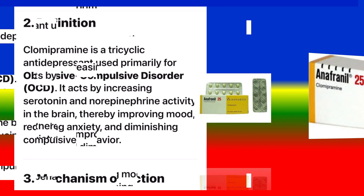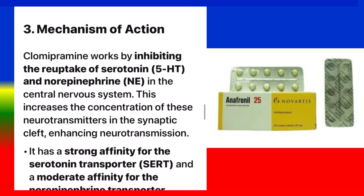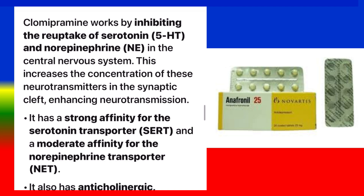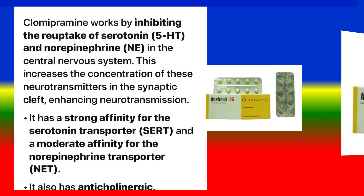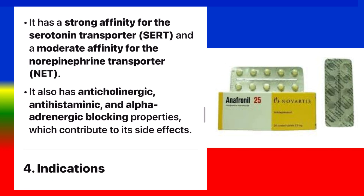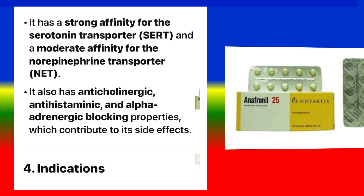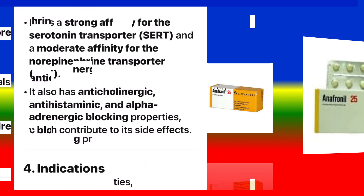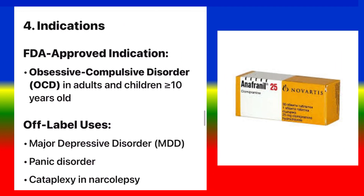Mechanism of Action: Clomipramine works by inhibiting the reuptake of serotonin (5-HT) and norepinephrine (NE) in the central nervous system. This increases the concentration of these neurotransmitters in the synaptic cleft, enhancing neurotransmission. It has a strong affinity for the serotonin transporter (SERT) and moderate affinity for the norepinephrine transporter (NET). It also has anticholinergic, antihistaminic, and alpha-adrenergic blocking properties, which contribute to its side effects.